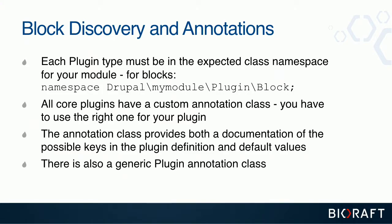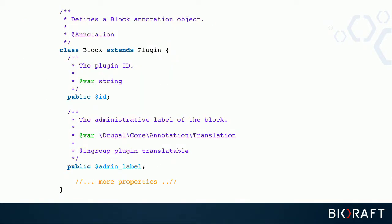Block discovery uses annotations: each plugin type expects classes in a specific namespace and using the right annotation. All core plugins have a custom annotation class — so '@Block' corresponds to an actual PHP class. The Block annotation class extends PluginAnnotation and documents valid keys like 'id' and 'admin_label' with their allowed values and defaults.